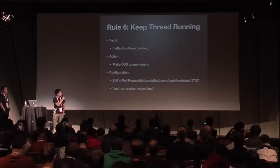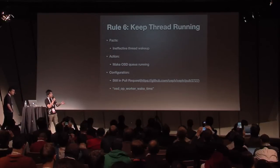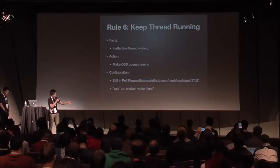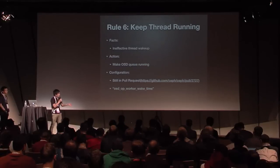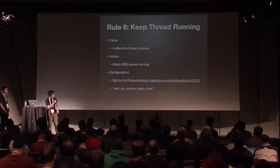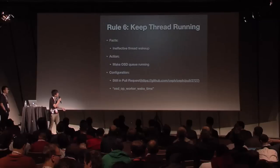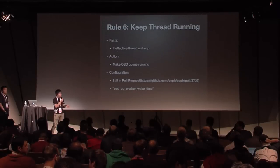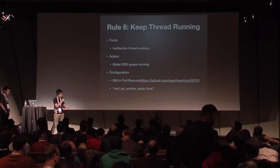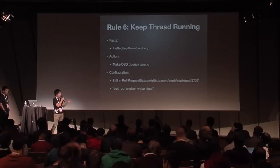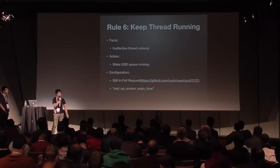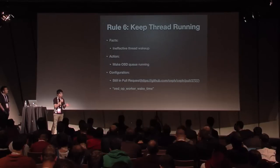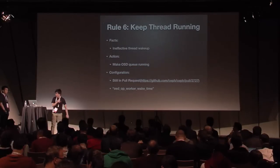The sixth point is keeping threads running. IO needs to flow through many threads, and when the network thread receives an IO request, it wakes up the next thread, which wakes up the next thread. Threads frequently wake up and sleep, consuming many CPU cycles. We have a patch to reduce this overhead. You can set the OSD op worker wait time to control how many times the thread needs to wake up. This can yield very good performance improvements if you use this backend patch.